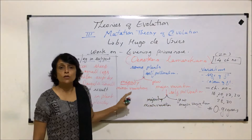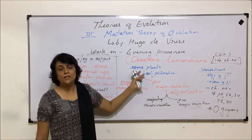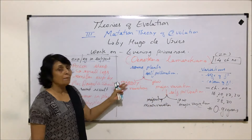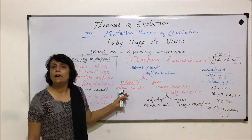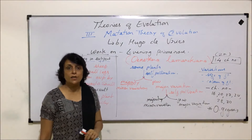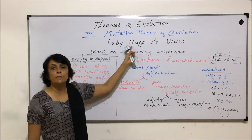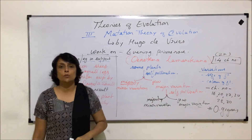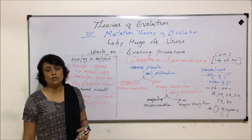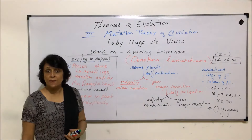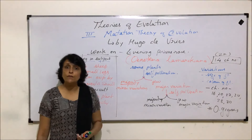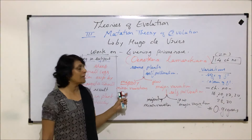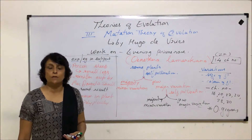Despite its limitations, this theory was quite successful in explaining many points. Combining Darwin's theory of natural selection with the mutation theory by Hugo de Vries, the next and most accepted theory was postulated — the modern theory of evolution — which will be discussed in the next video.